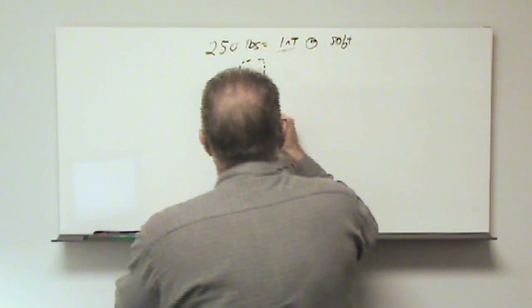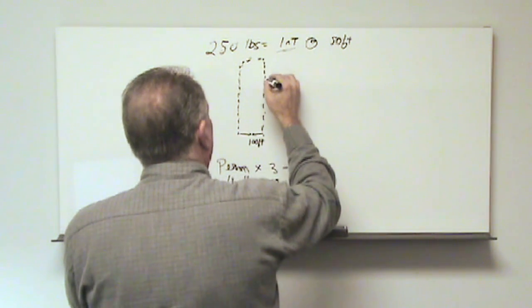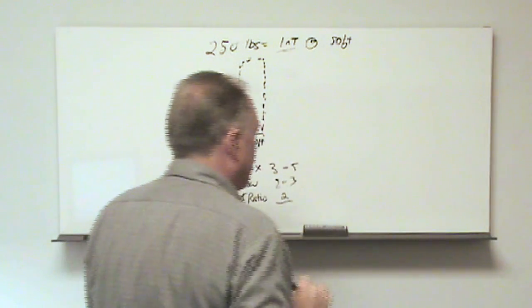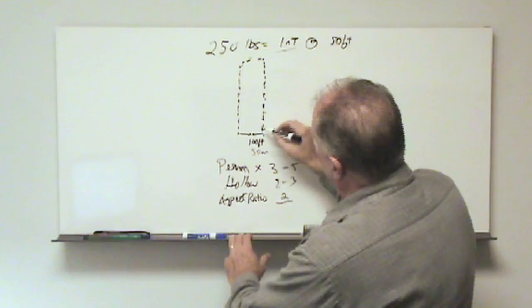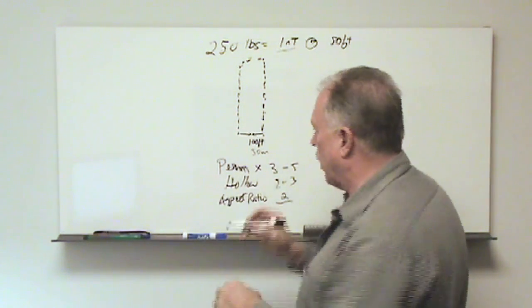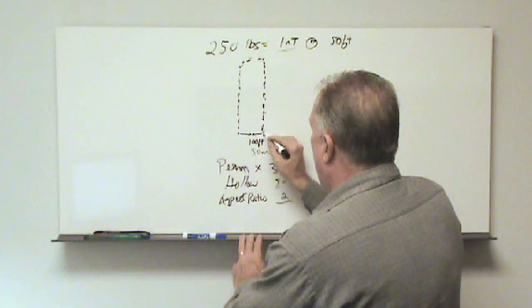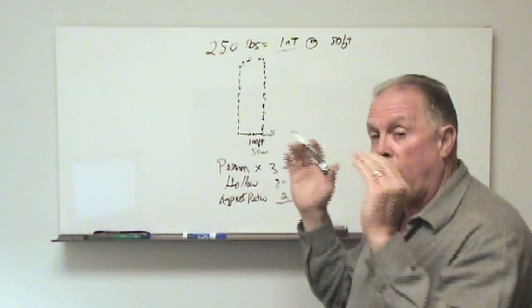This means that our survey grid could be 100 foot line spacings, 100 foot or 30 meters. And the reason is because the magnetometer sees in all directions. It sees omnidirectionally. So we will see out both sides 50 feet, a total of 100 foot swath.